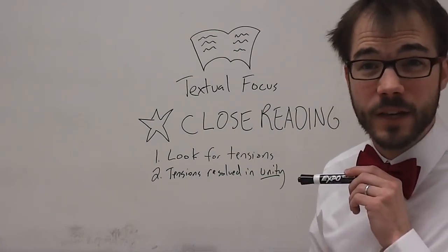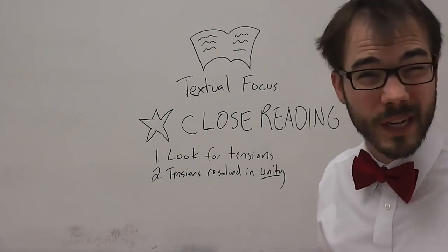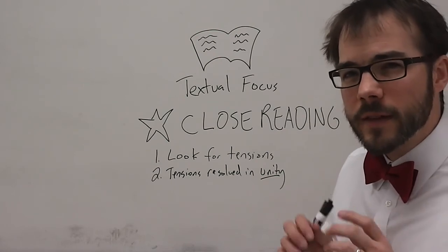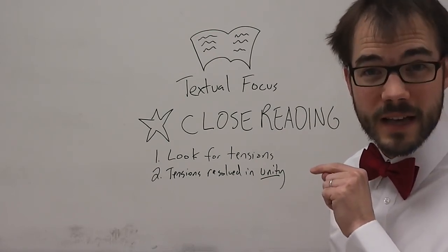If a work doesn't have unity, then it falls apart and doesn't feel like a complete whole. So the New Critical look at a work is to look at it very closely, identify things that cause tension, and find out how the text is unified as a whole.